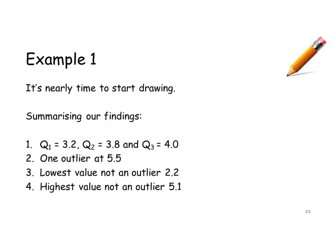We now have all of our data. Let's put it together: Q1 = 3.2, Q2 = 3.8, Q3 = 4.0, one outlier at 5.5, lowest value not an outlier: 2.2, and highest value not an outlier: 5.1. So let's draw that on the box plot.